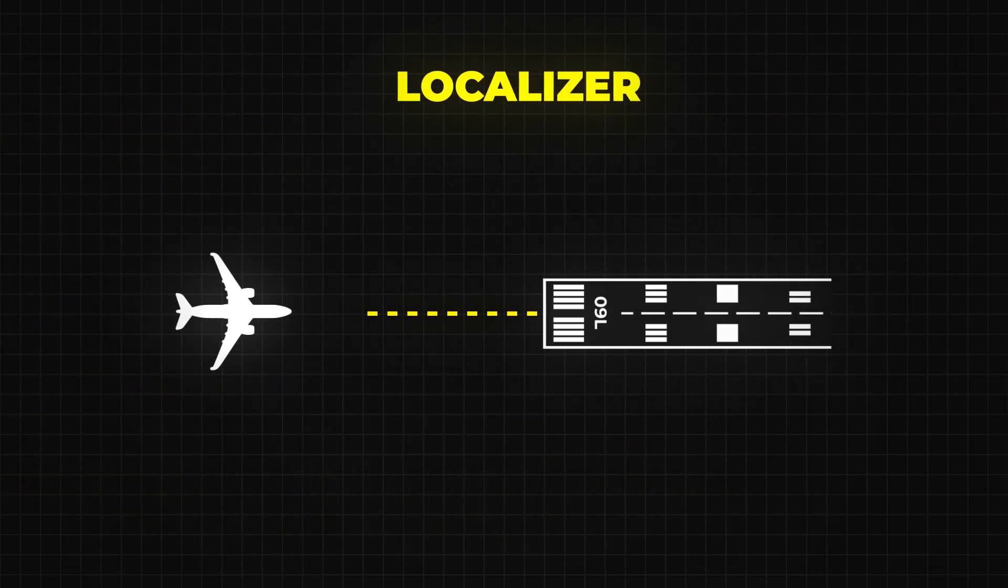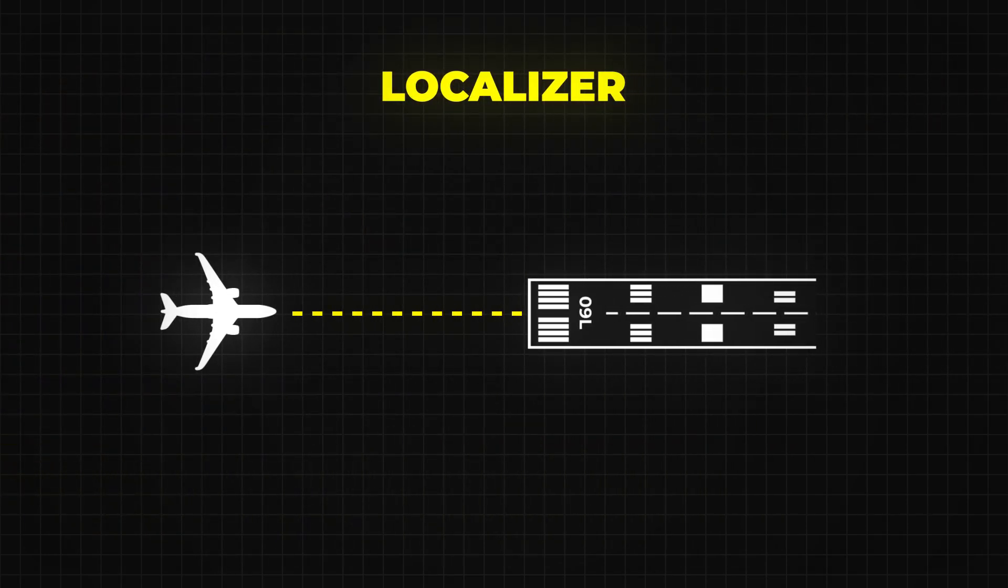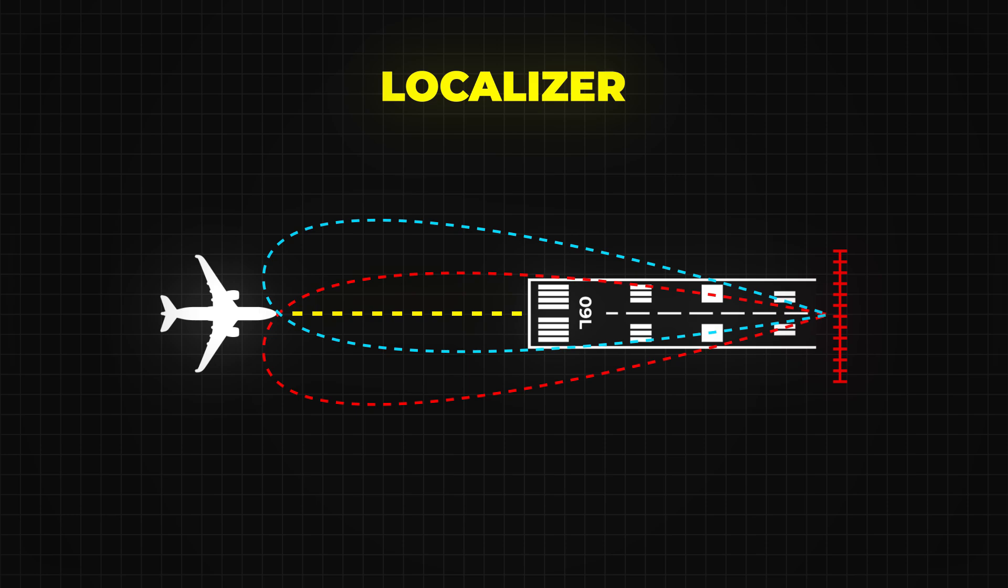The localizer helps with lateral guidance. It tells the pilot if they are left or right of the runway center line. The localizer antenna is usually placed at the far end of the runway and sends out two overlapping radio beams, one modulated at 90 Hz and the other at 150 Hz.